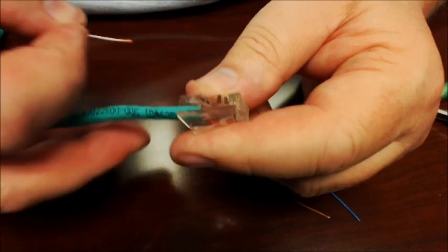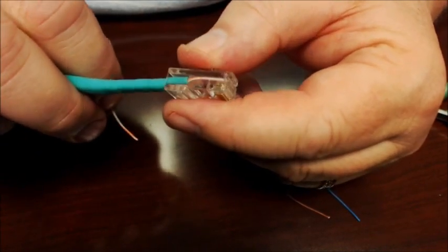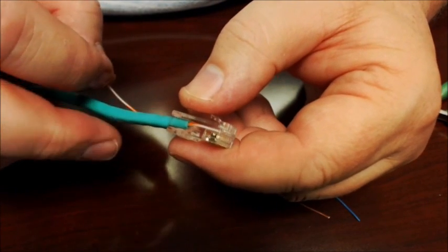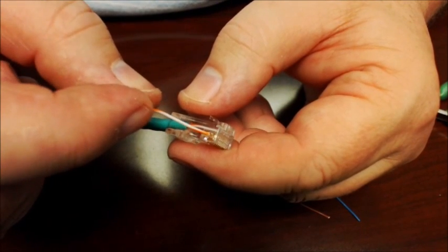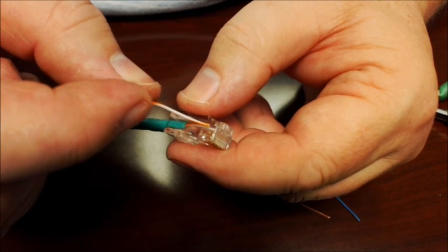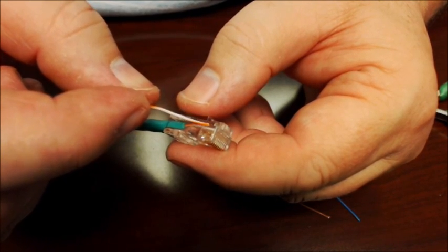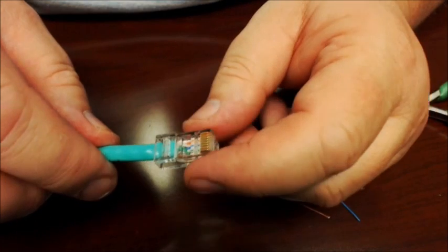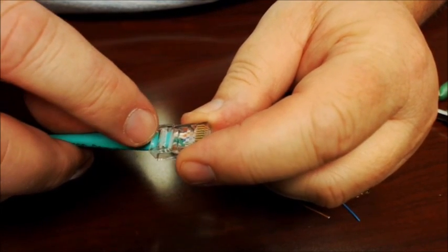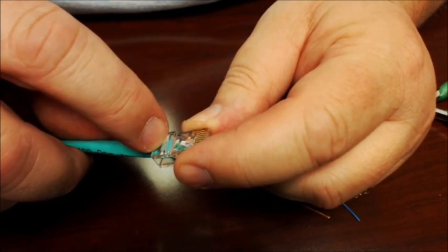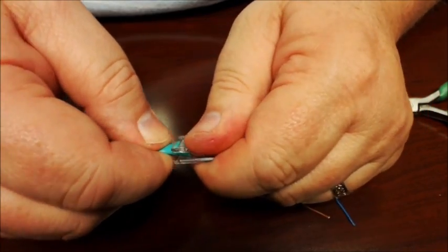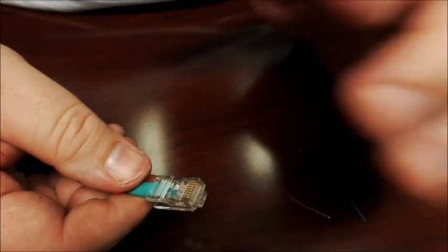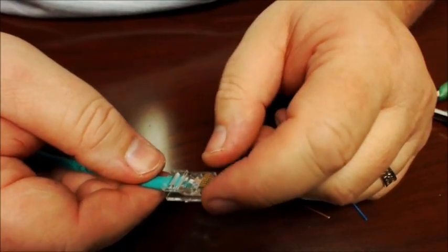But now this little copper bit lines up with the wire. Let's see if you can see it better on this side. This little copper bit lines up with the wire and you have enough of the outside insulation to come up underneath this little crimp here.